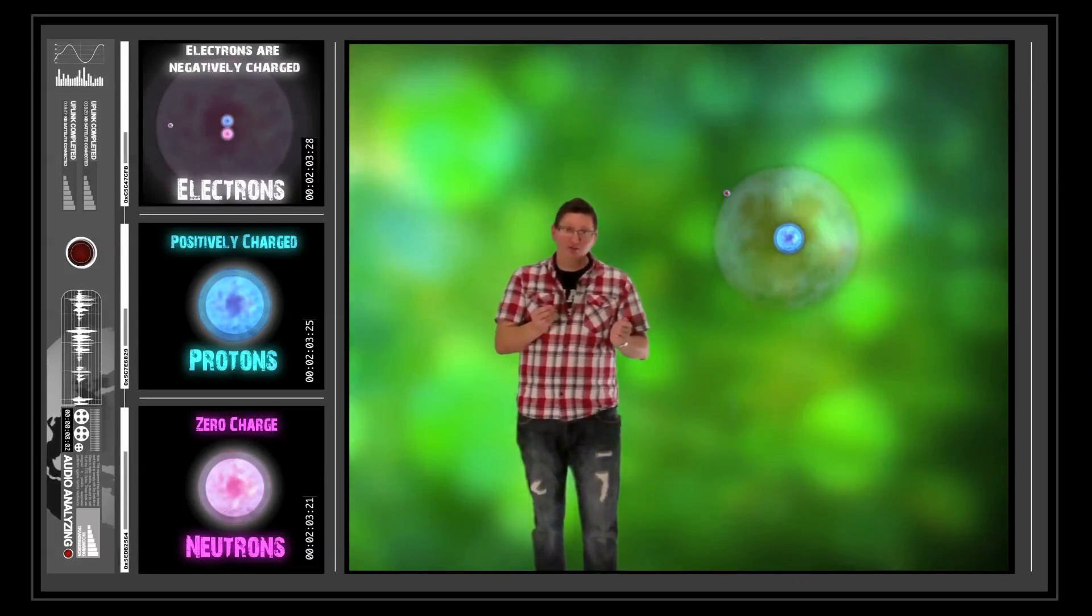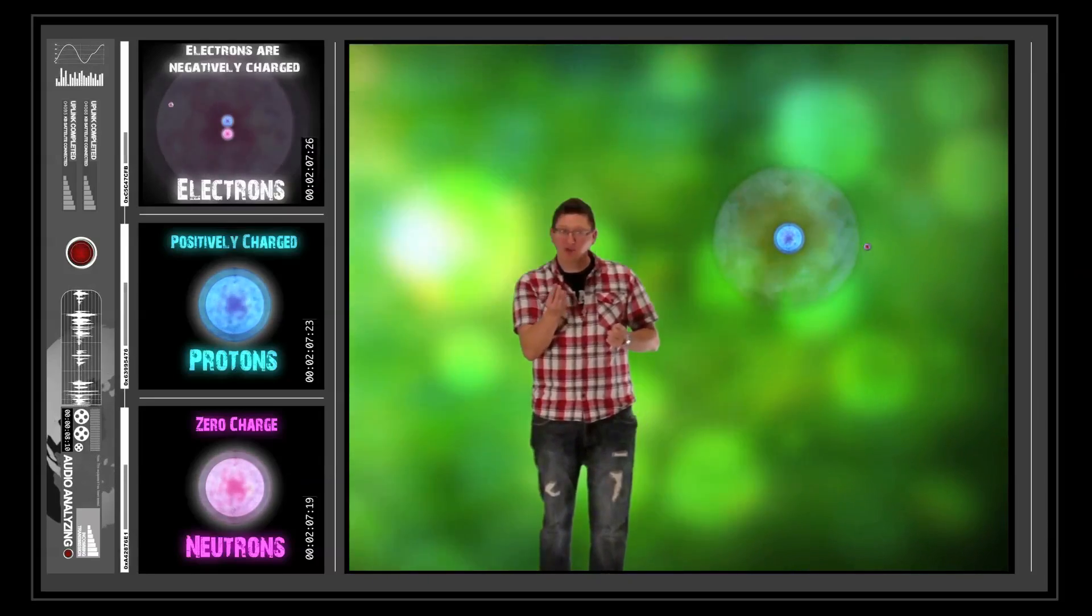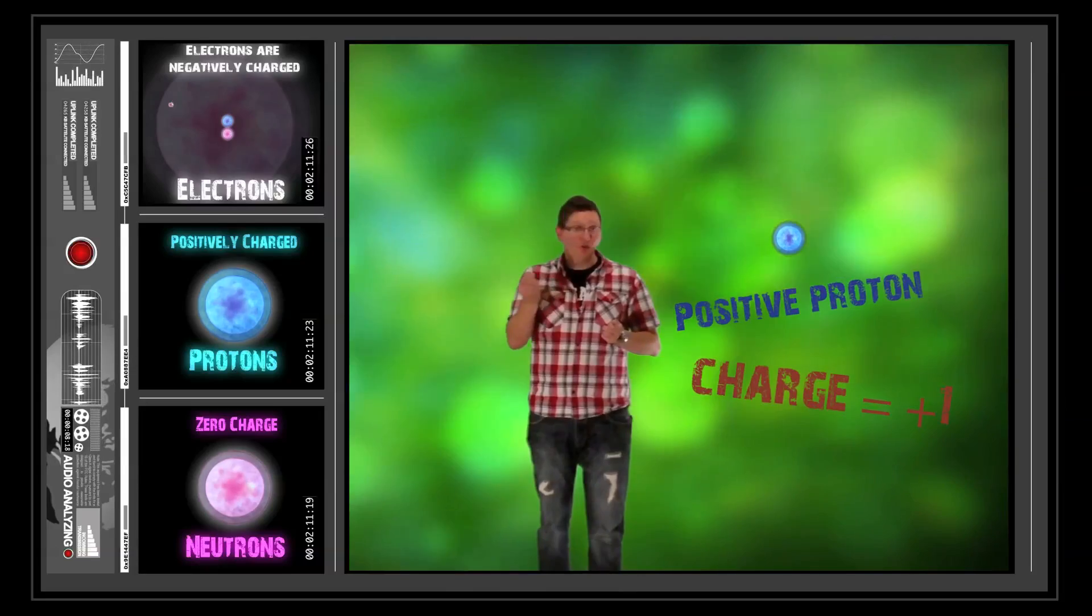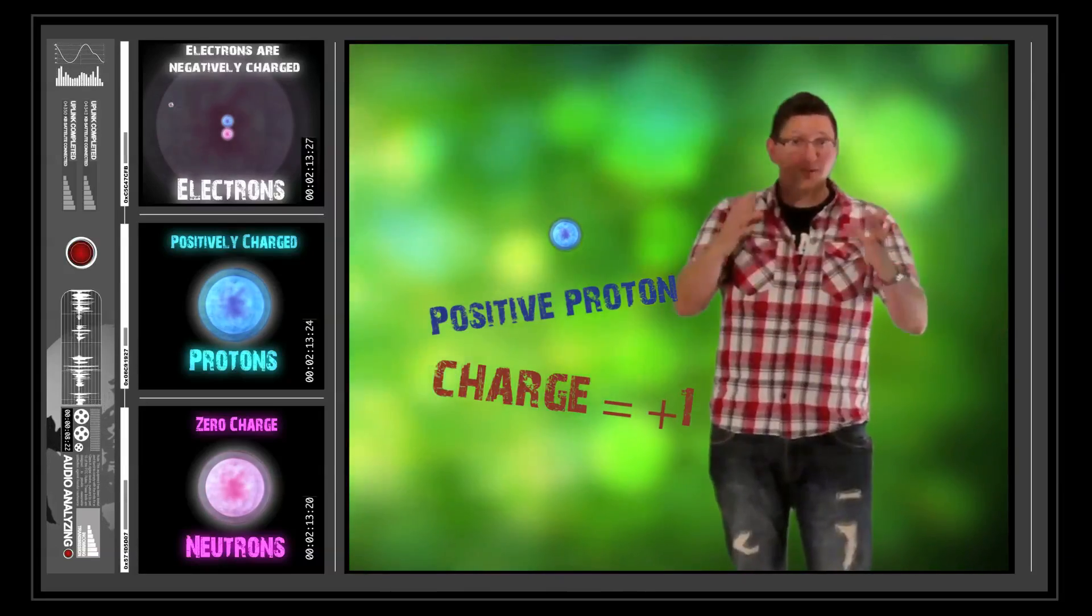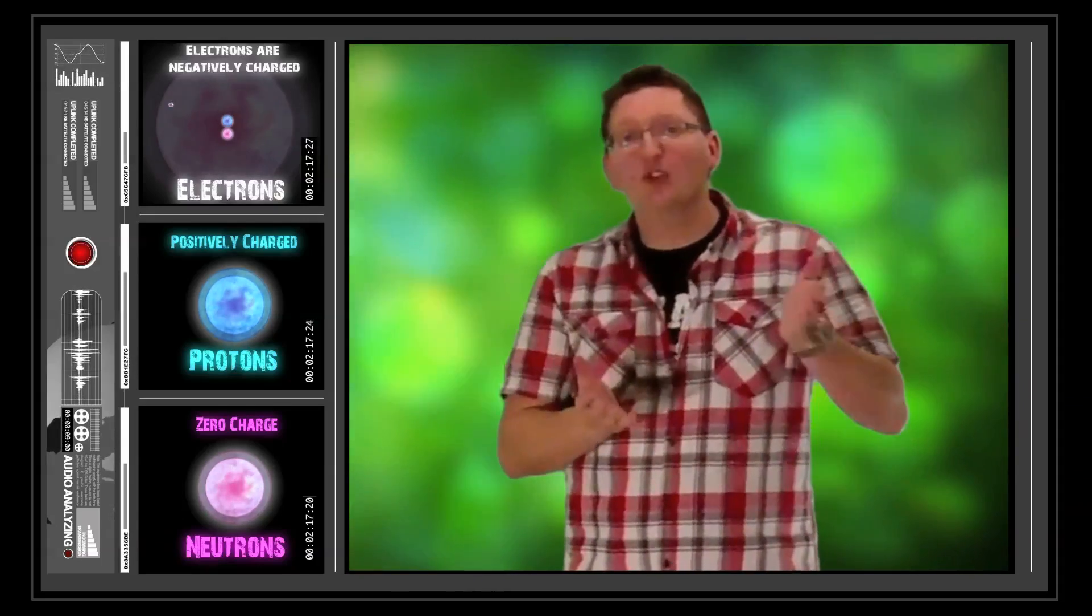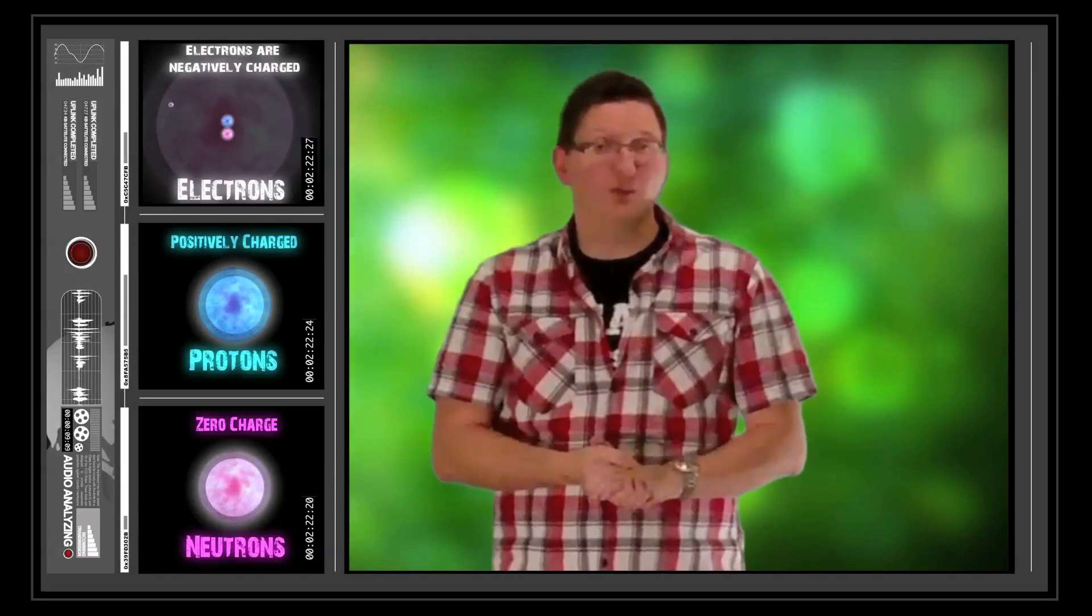If it lost an electron, it lost a negative charge, then it would just be left with a positively charged nucleus. And that would become a positive proton or a hydrogen atom. If it gained an electron, then it would increase its negative charge by a factor of 1 and become negatively charged.